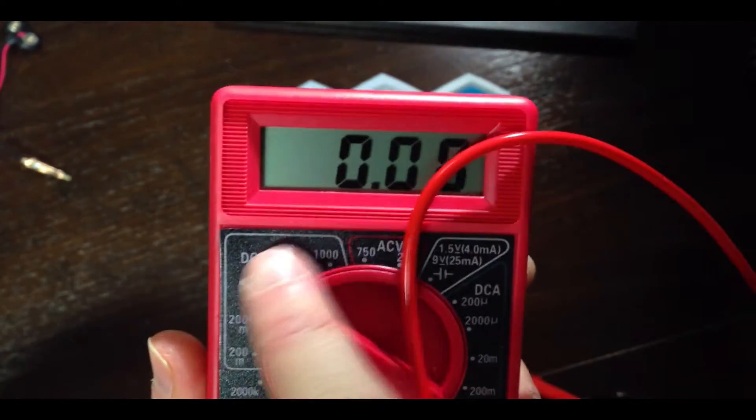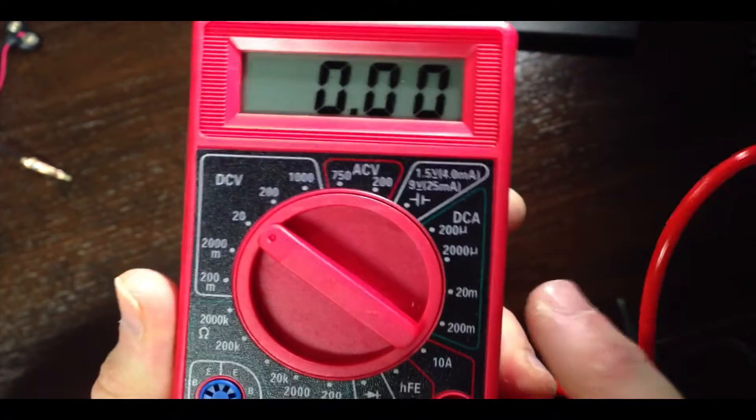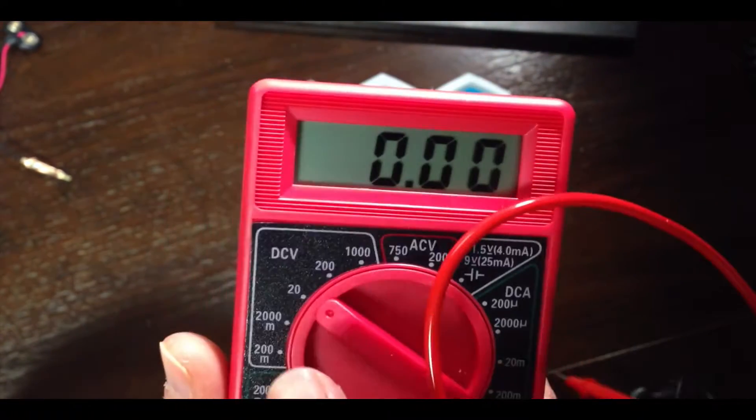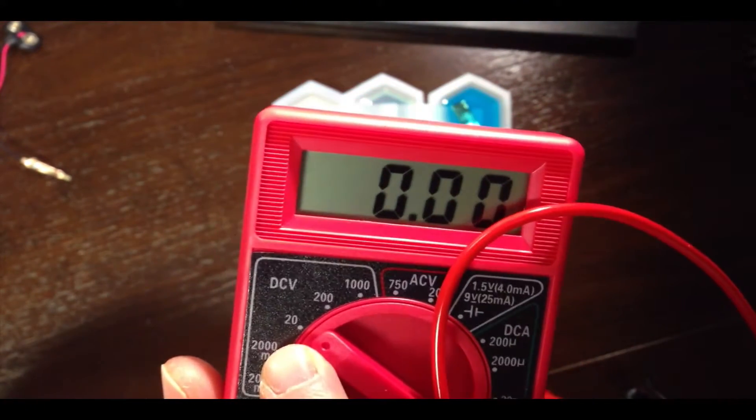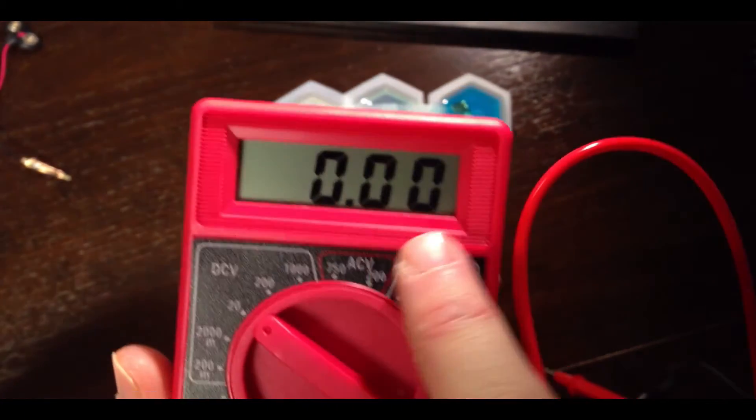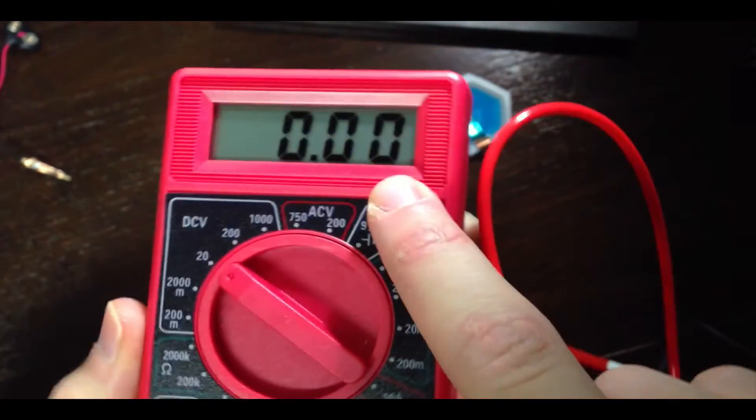For example, when the dial is within this region, we're measuring DC voltage on the display above, and the specific numbers show you the maximum voltage that can be measured on that setting. So here we have it set to 20 volts DC. That means that this has a maximum of 20 volts that it can display up here, and the units shown are volts.